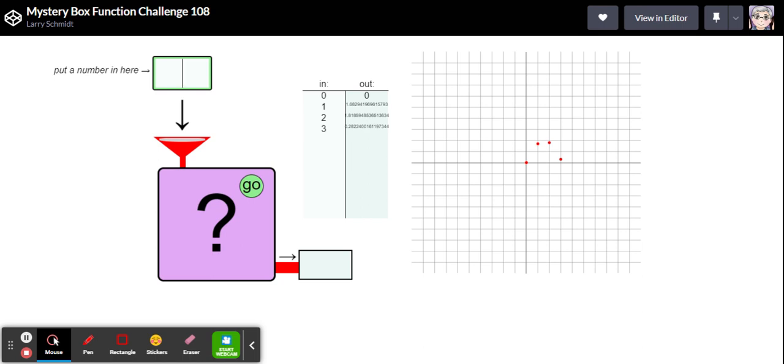If this is a parabola, it's an odd one. Maybe it's trig. So let's just keep going beyond three.